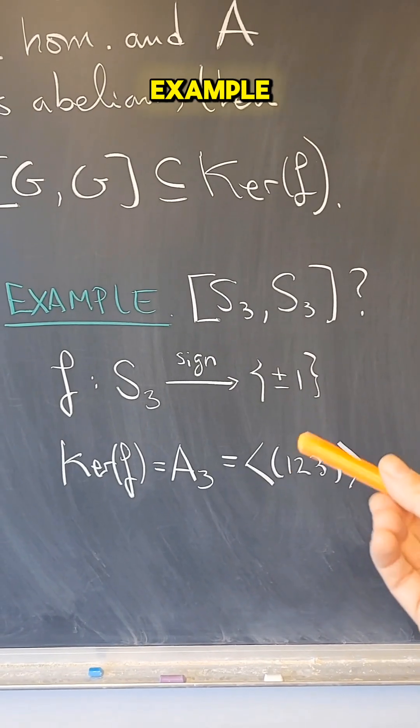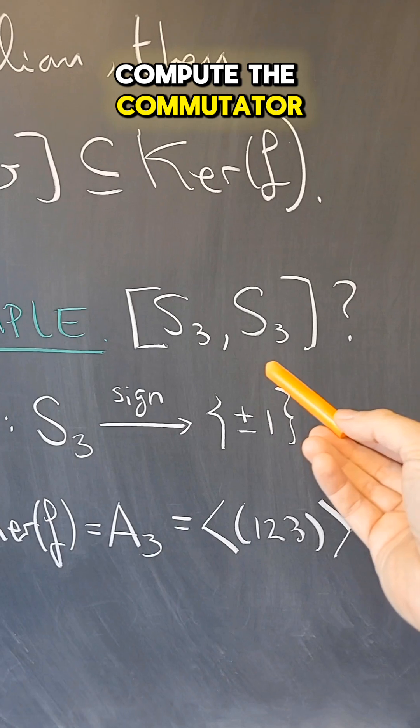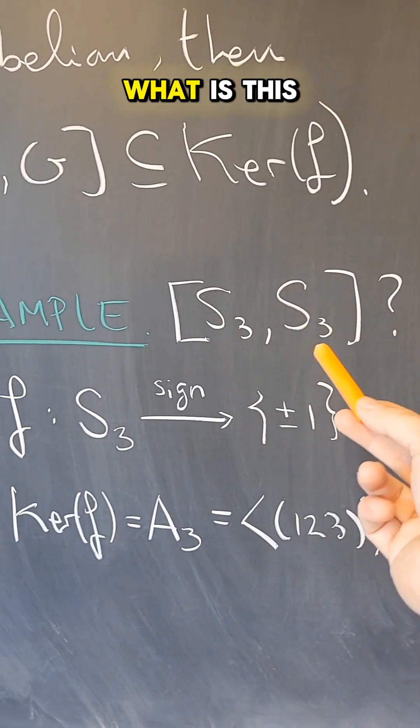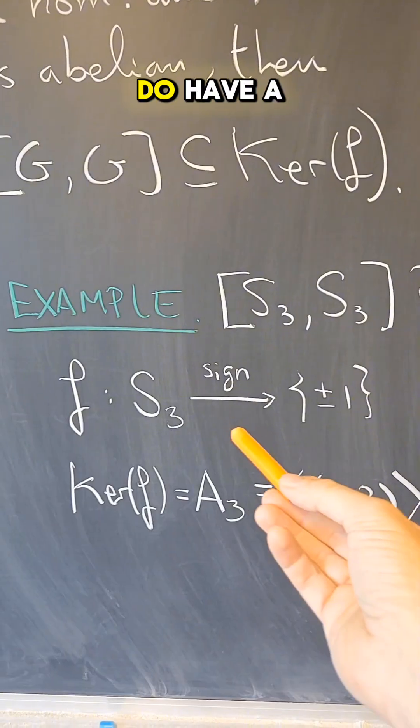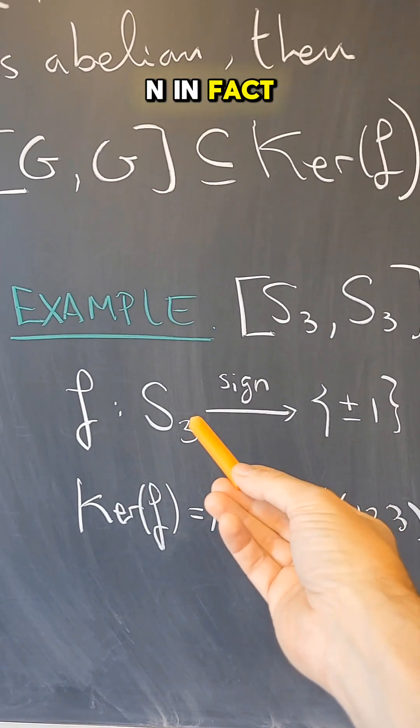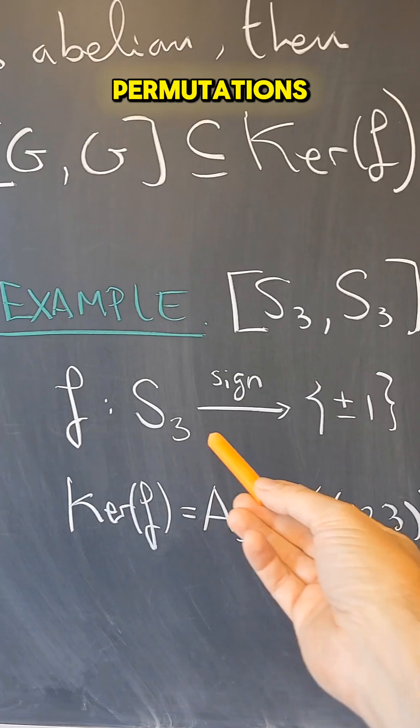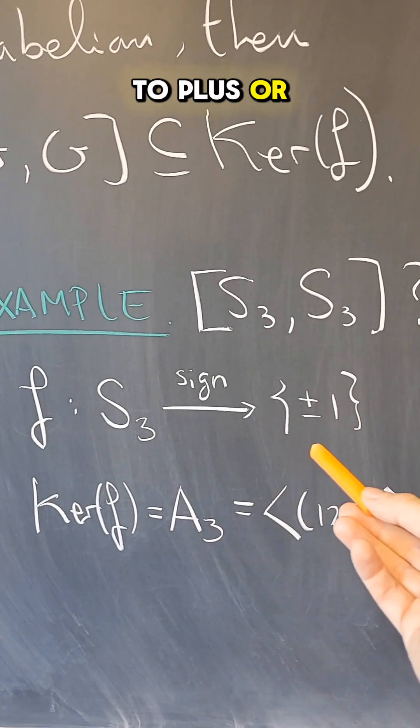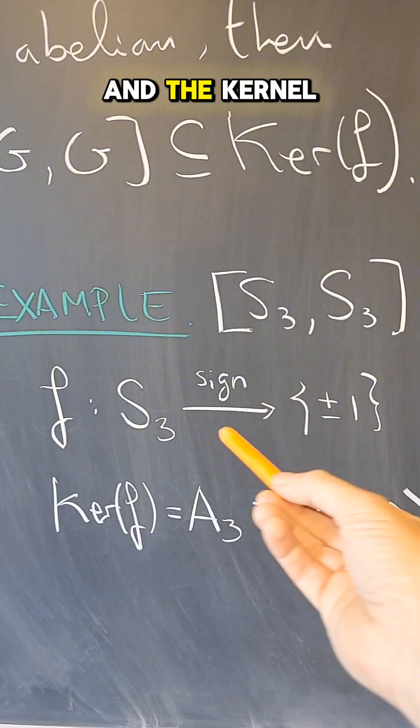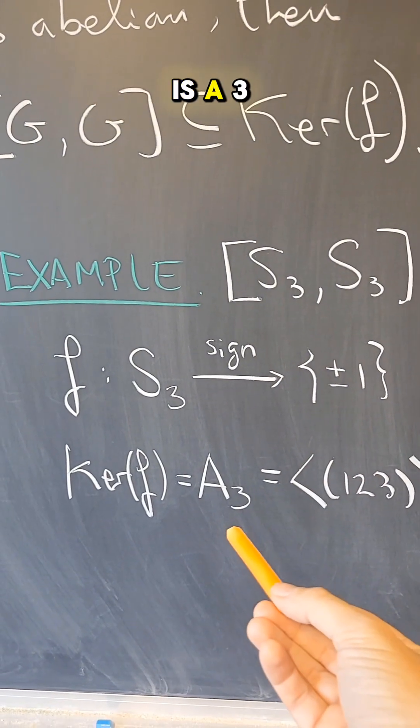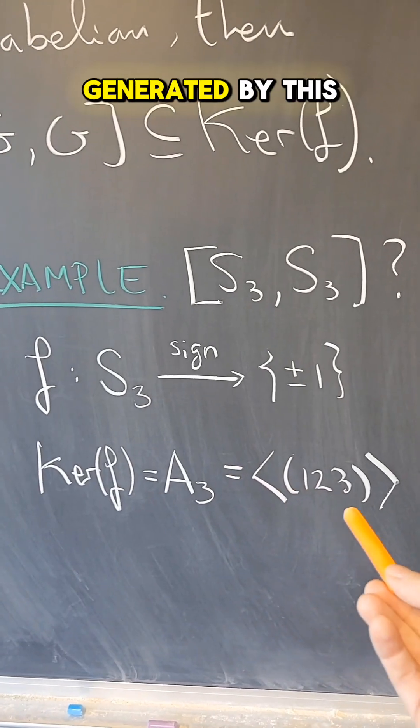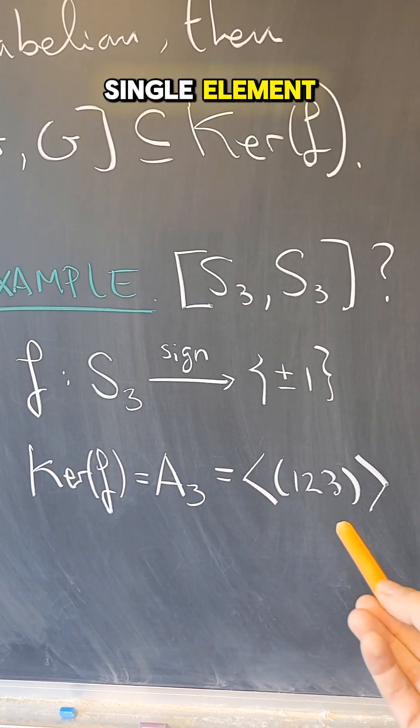Let me start with an easy example. Let's try to compute the commutator subgroup of S3, the permutation group on three letters. We do have a homomorphism from S3, from any Sn in fact, given by the sign of the permutations, that goes to plus or minus one, and that is a surjective homomorphism. And the kernel of this homomorphism is A3, the alternating group in three letters, which is actually, in this case, generated by this single element.